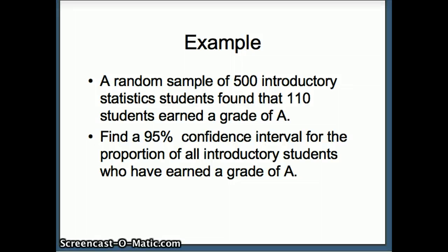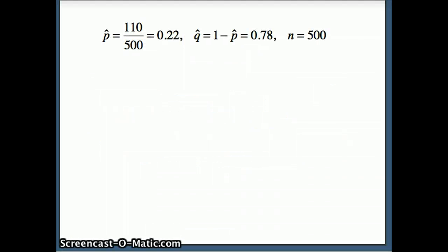We want to find the 95% confidence interval for the proportion of all introductory students who earned grades of A. We want to generalize something from this sample to the entire population, use the statistic to make an inference about the parameter. So here are our numbers: 110 out of 500, 22% earned an A, which means of course 78% did not.